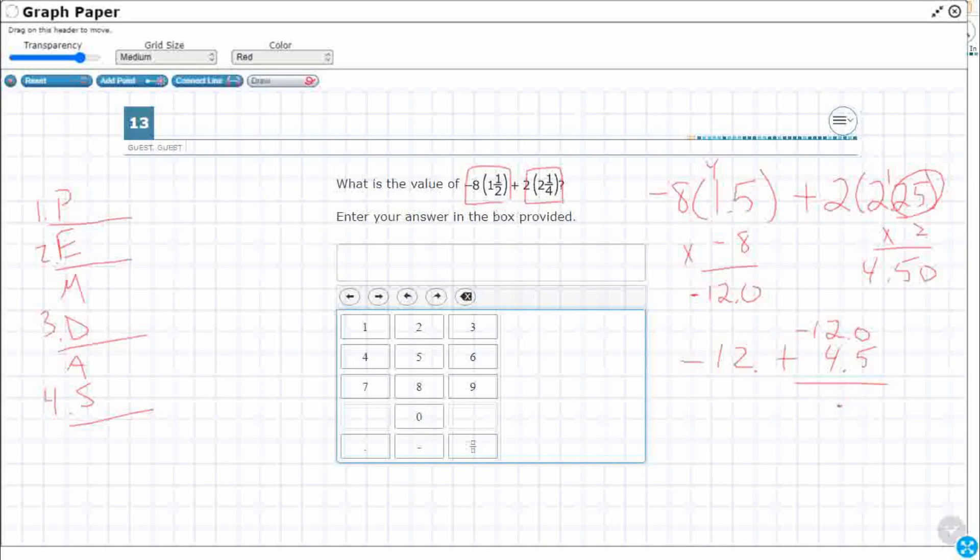And I'm going to add them up. But since that's a negative 12, it's going to actually end up like I'm subtracting because that's a negative 12. So I'm adding a negative, which is the same as subtraction.